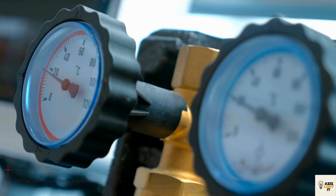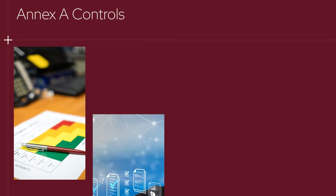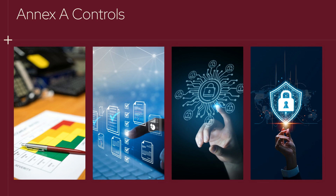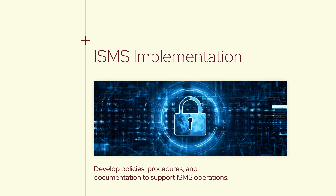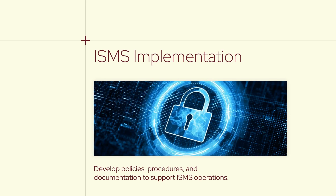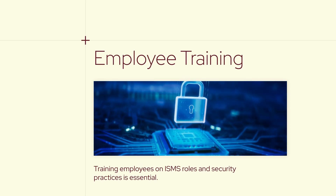Define and implement controls from Annex A based on the risk assessment. This includes technical controls like encryption, access management, and network security, as well as physical and organizational controls. Develop policies, procedures, and documentation to support the implementation and ongoing operation of the ISMS, including security guidelines, roles and responsibilities, and detailed security protocols. It is also essential to train employees on their roles in the ISMS, raise awareness about information security, and ensure that they are familiar with security practices and policies.